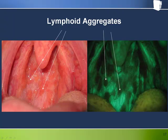Close examination of this same area under white light — accomplished here with a good clinical photograph taken with a flash — reveals that these dark areas exactly correspond to the red nodules of lymphoid tissue. These are a normal variant that are completely benign.